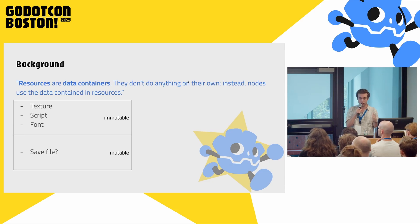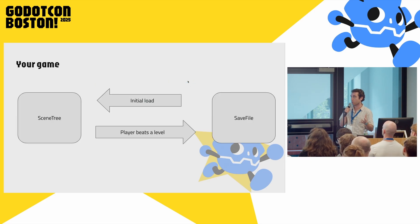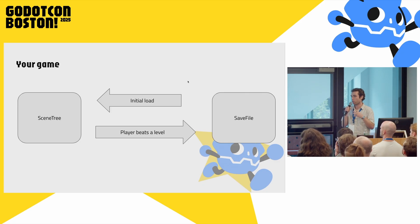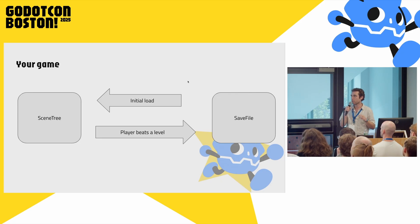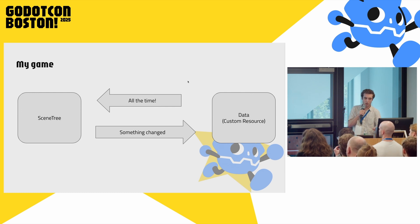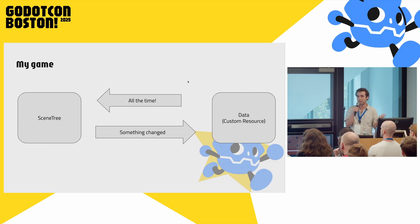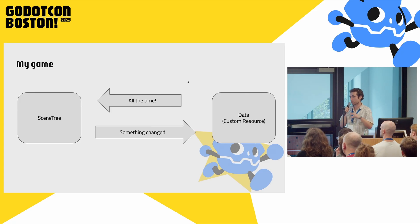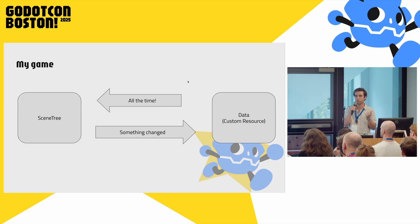So I'm going to speculate that your game looks a little bit like this. You have a beautiful scene tree, and when you first load your game, you load from a save file. When something big happens — when the player beats a level — you update your save file. So it's read once, write many times. Pretty common, totally reasonable pattern. My game looks a little more like this: I have a scene tree, something changes — probably something smaller than beating a level, like a player draws a card or gains some life — and I write that data to a custom resource. And when the scene tree needs to represent that data, it reads it from the custom resource. This custom resource is the source of truth for this information.